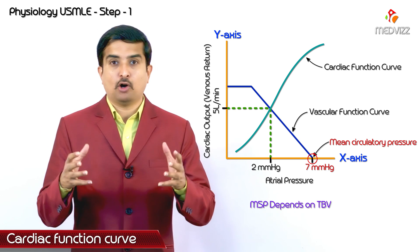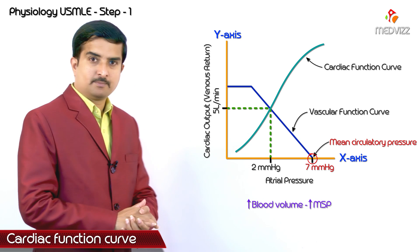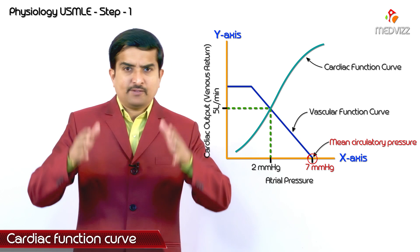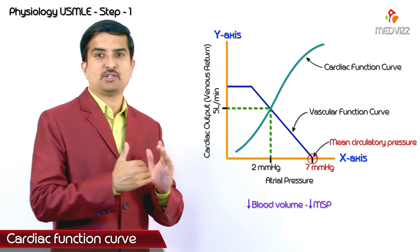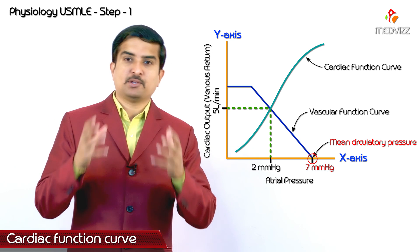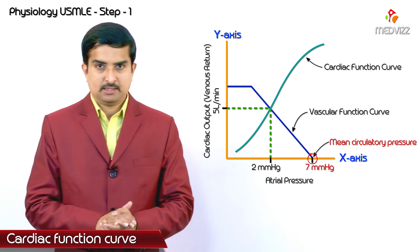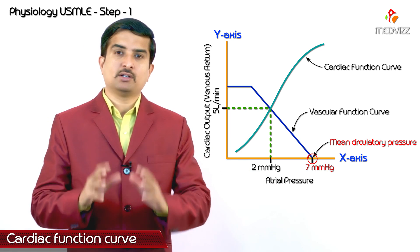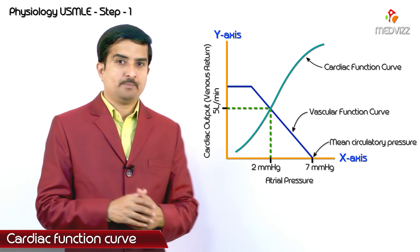Whenever blood volume increases, mean systemic pressure increases. In the same way, whenever blood volume decreases, mean systemic pressure decreases. Not only that — mean systemic pressure also increases with venoconstriction. The key point to remember is that mean systemic pressure depends upon blood volume.